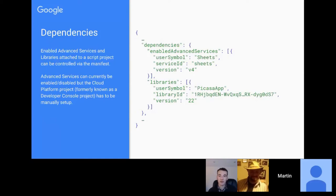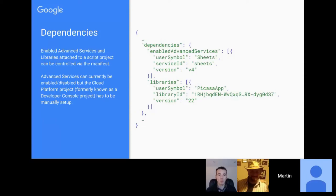There's a scenario where you have an advanced service in another script project but can't set up the API console for it. I think that will probably change — the manifest files feel like version one, and there's likely more to come in terms of Apps Script deployment, where we might be using enabled advanced services and hooking them into a console project.